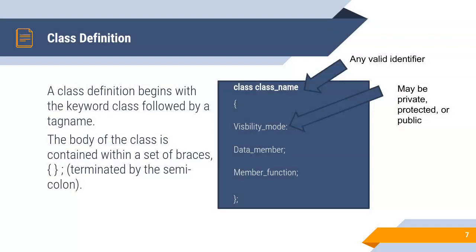And visibility modes. There are three types of visibility modes: private, protected and public. Data members and member functions are declared with the visibility modes.